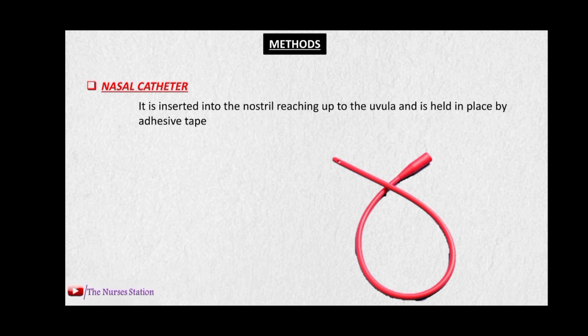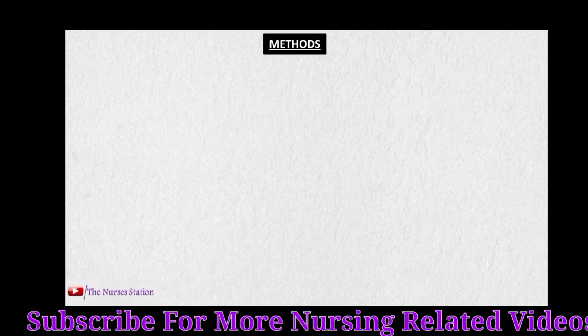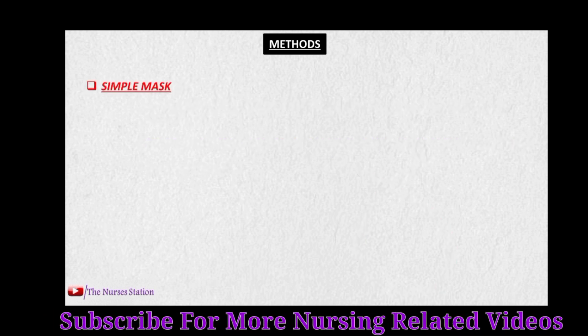The next method is the nasal catheter method. In this, a nasal catheter is inserted into the nostril and it reaches up to the uvula, and it is held in place by adhesive tape. The nasal cannula is placed in only one nostril, and the nostrils are changed every eight hours in this method. This doesn't interfere with the patient's freedom of talking, eating, and moving in the bed. The flow rate in this method is usually 1 to 6 liters per minute.